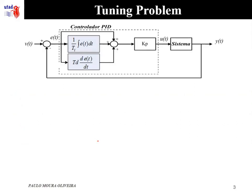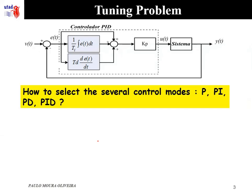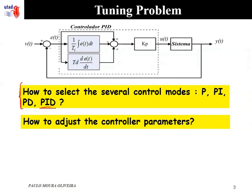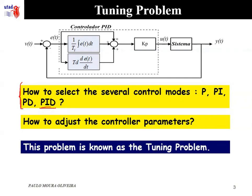Concerning the tuning problem, the question is how to select the several control modes: P, PI, PD, or PID. The first thing in designing a PID controller is to decide about the control modes. After deciding about the control modes, the question is how to adjust the controller parameters. This last question is known as the tuning problem, which consists of finding the constants for the PID controller.